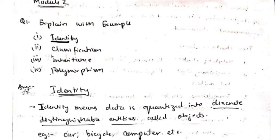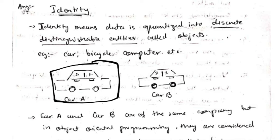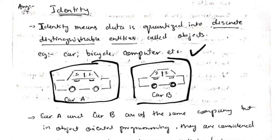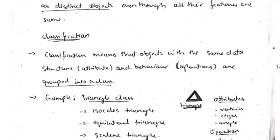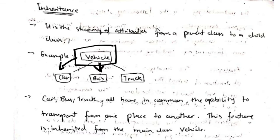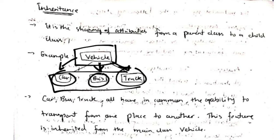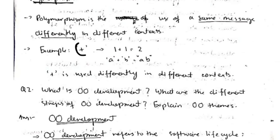OO concepts: identity — two cars with the same color and size are still distinct entities; that is identity. Classification — behaviors and data that are similar are grouped together. Inheritance — from a main class like vehicle, you can develop customized subclasses like car, bus, and truck, which inherit all the features of the vehicle class and add their own custom features. Polymorphism — the plus sign can produce different results: with numbers it gives a sum, with strings it concatenates.